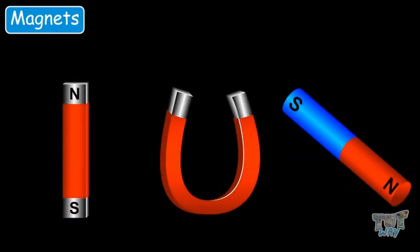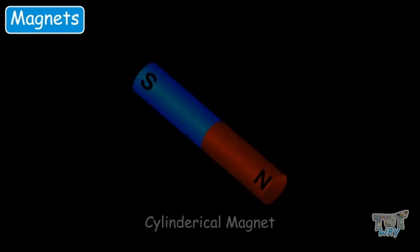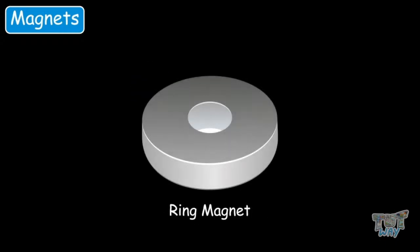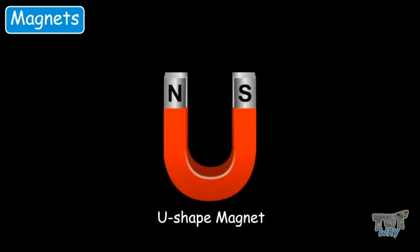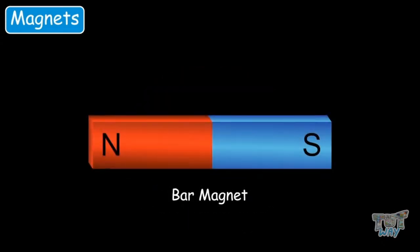No matter what the shape of the magnet is, it always has a north pole and a south pole. This is a horseshoe shaped magnet and it has a north pole and a south pole. This is a cylindrical magnet — this also has a north pole and a south pole. This is a ring magnet. This is a U shaped magnet. This one is called a disc or a circular shaped magnet, and this one is a bar magnet.